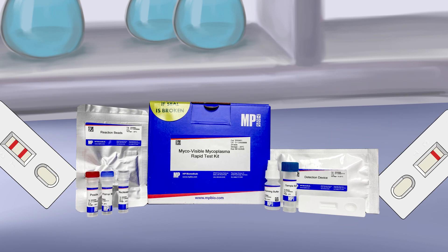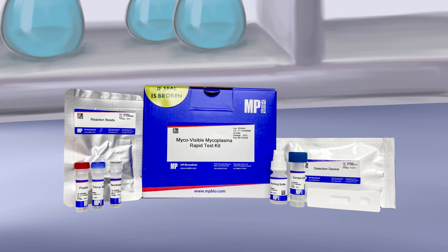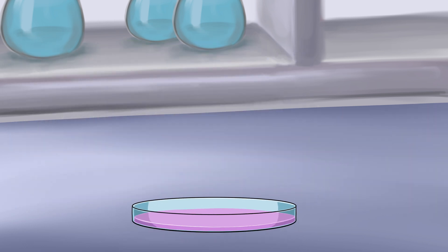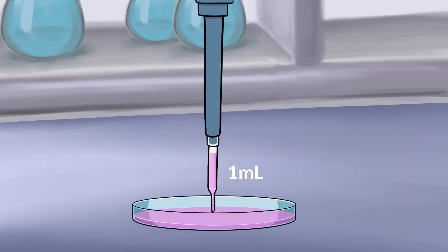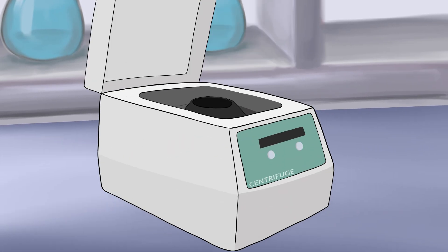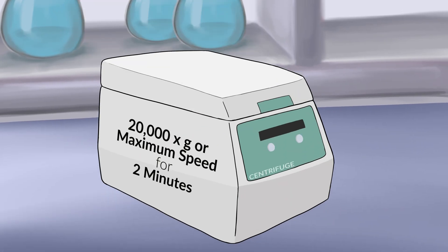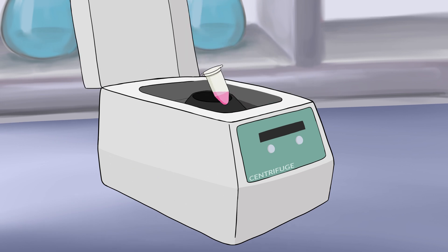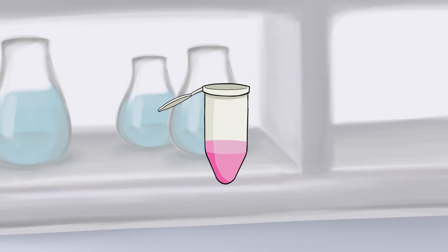To use the MycoVisible Mycoplasma Rapid Test Kit, first prepare the samples for the test. Transfer 1 milliliter of cell culture supernatant into a 1.5 milliliter microcentrifuge tube. Next, centrifuge the tube at 20,000 G or maximum speed for 2 minutes. Carefully decant the supernatant afterward.